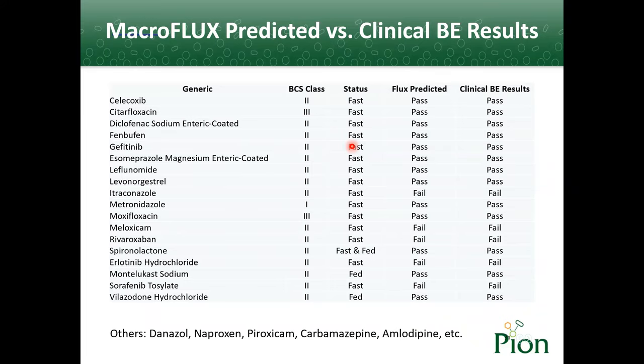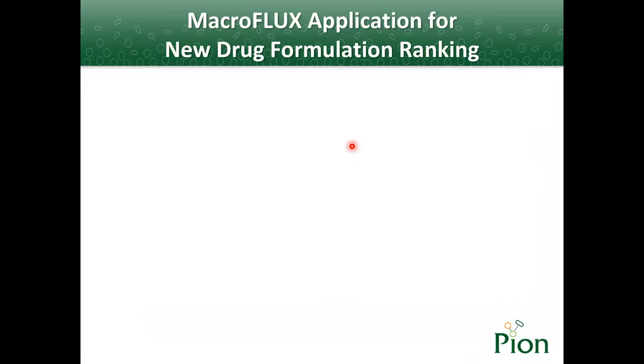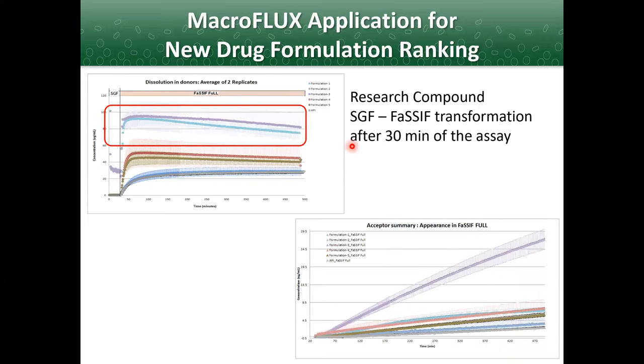So how about the application for new drug development? How can we use it for formulation ranking? Here is an example provided by Genentech. There were five different formulations. We could see the purple formulation and the blue formulation had similar dissolution profiles. However, the flux for the purple formulation is much higher than the blue one. As a result in animal study, the purple formulation performed the best in dog model.